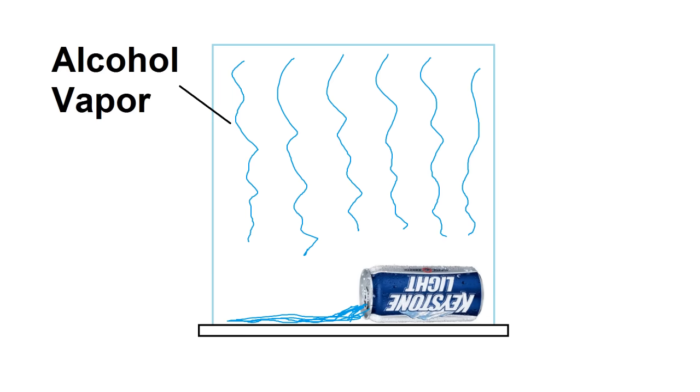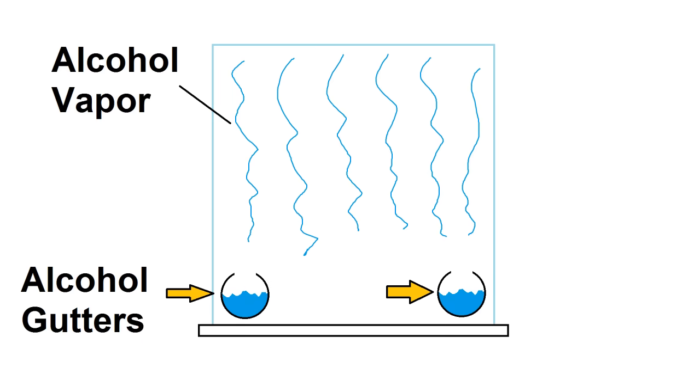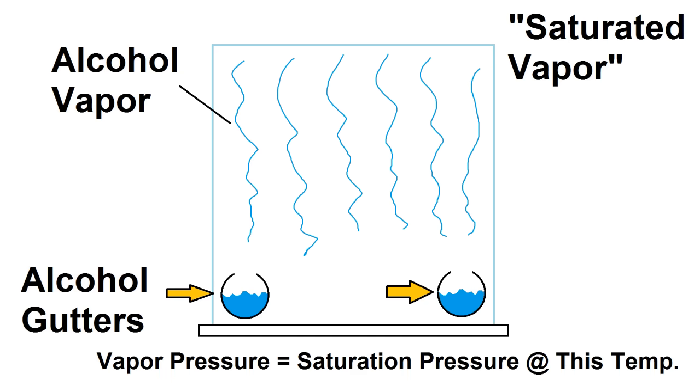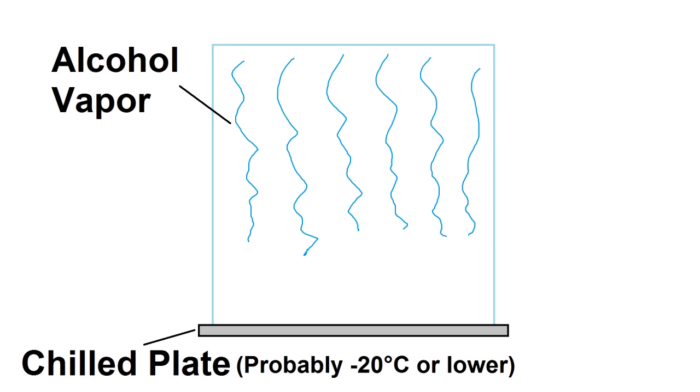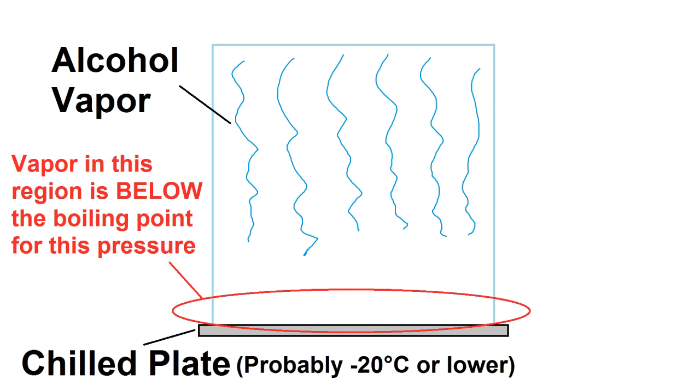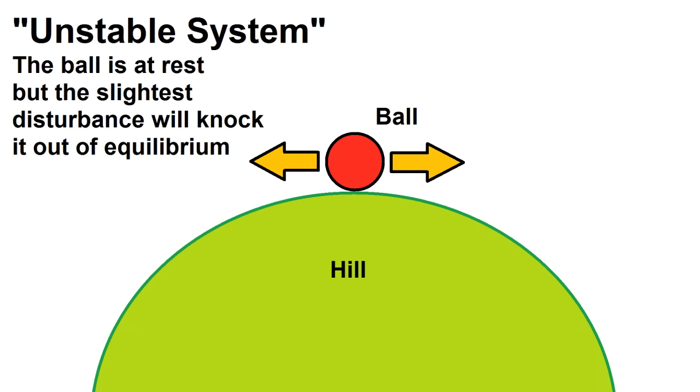Basically, you've got a chamber that's filled with alcohol vapor, which evaporates from a soaked rag or gutter or something like that. The vapor is totally saturated, meaning it's like 100% humidity, except with alcohol vapor rather than water vapor. Then you've got a plate at the bottom that gets really cold, way below freezing temperature. This causes the alcohol vapor near the plate to cool below the point at which it would condense, which is called being super saturated. Now, this super saturated vapor is unstable, and it wants to condense, but it needs a nucleation site to do it.